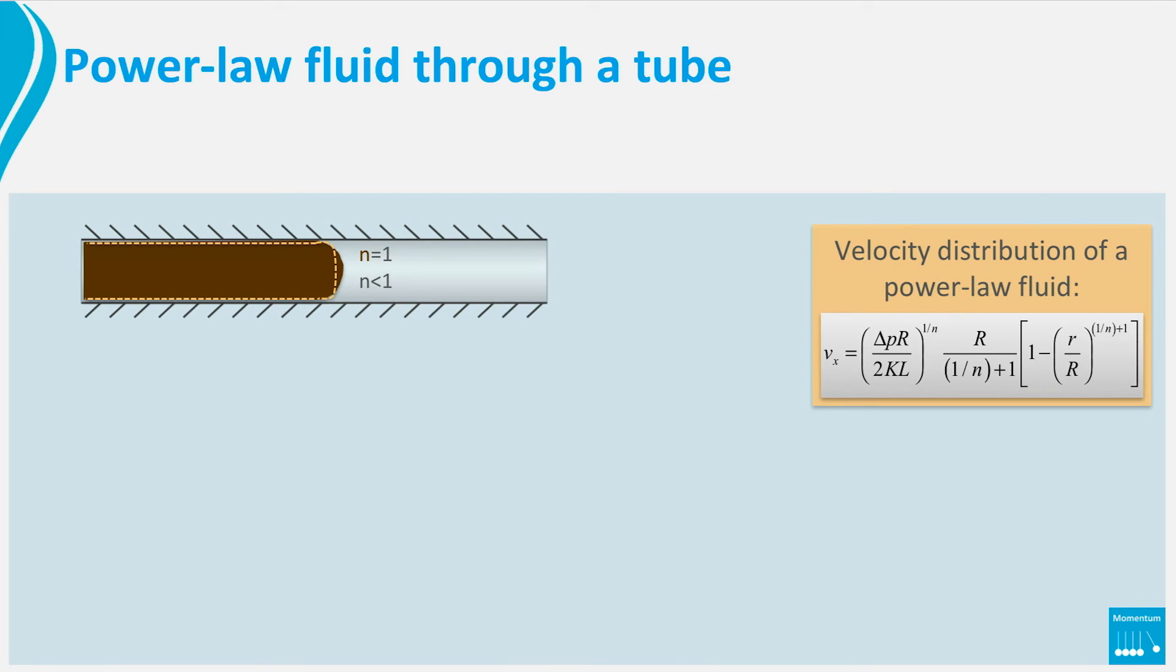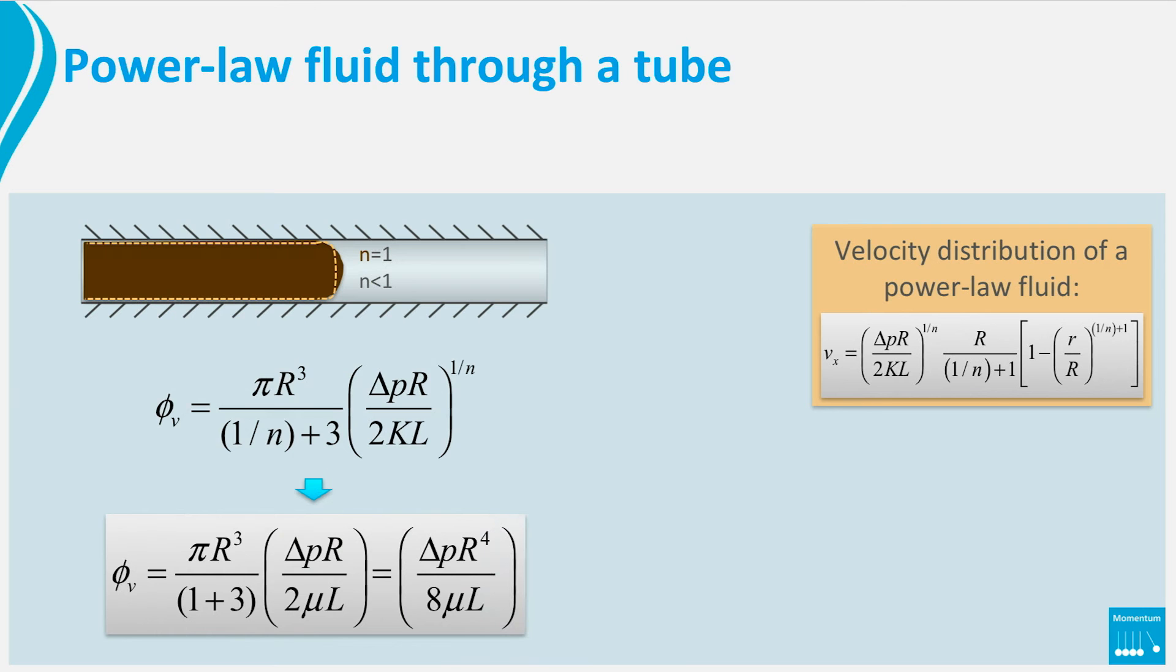When this velocity distribution is integrated over the cross-section of the tube, we obtain the volume flow rate. From pressure drop versus flow rate measurements we can obtain information about the power-law parameters k and n. This equation can be simplified to the Poiseuille equation for Newtonian fluids when n is 1 and k is equal to the viscosity mu.